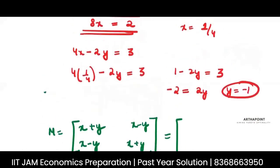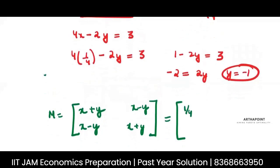X is 1 by 4 minus 1 because Y is minus 1, 1 by 4 minus minus 1, 1 by 4 minus 1 minus 1, and 1 by 4 minus 1.